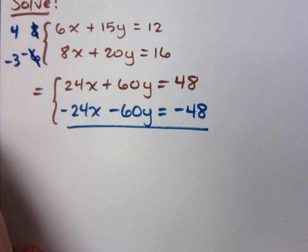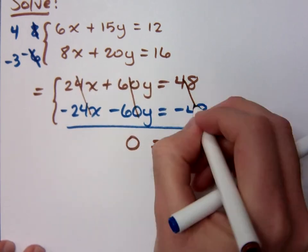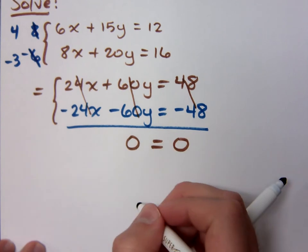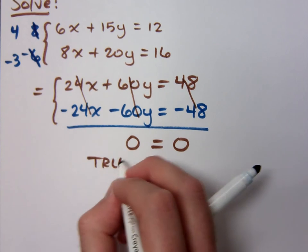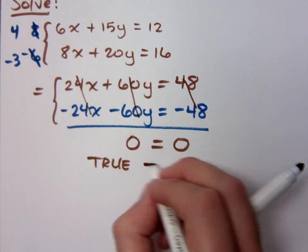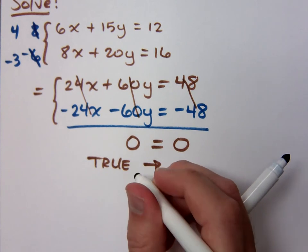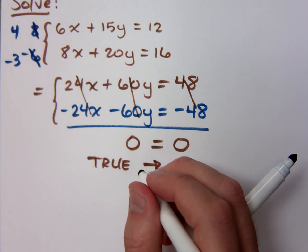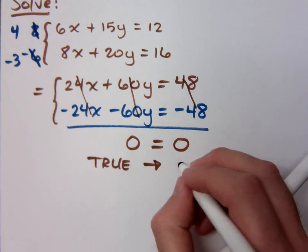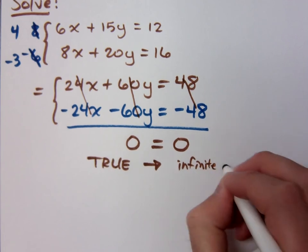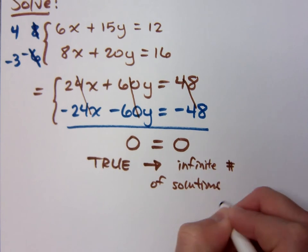So what happens here? It's all cancelled. So I get 0 equals what? Zero. Remember that? Yeah. This is a true statement, but we have to figure out what this means to us. If this is true, it's not no solution, but it means what? One of the real numbers. We can't say all real numbers because we're talking about solutions as ordered pairs. We have an infinite number of solutions, so these guys will be the same line, right?